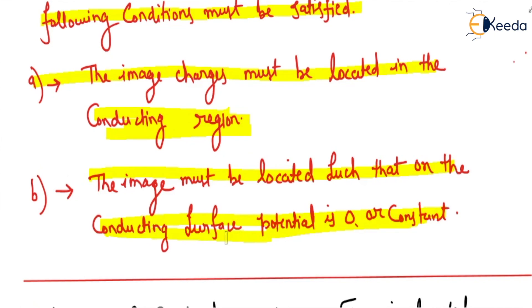Actually we are forming this image charge just to make the voltage constant, or the voltage should be zero at the conducting surface. It is due to the equipotential property of the conductor. Thank you for watching the video.